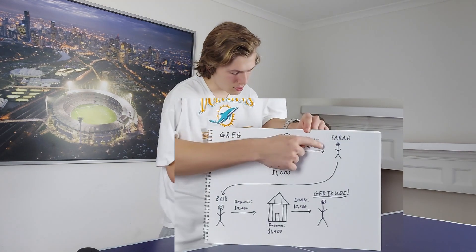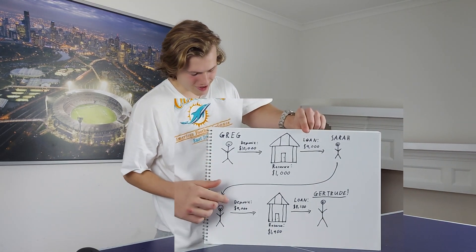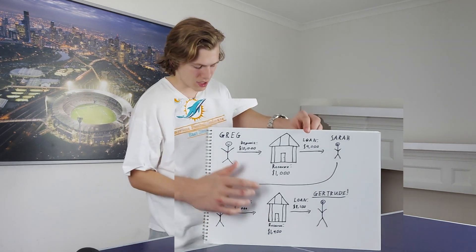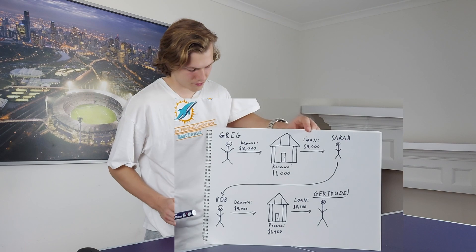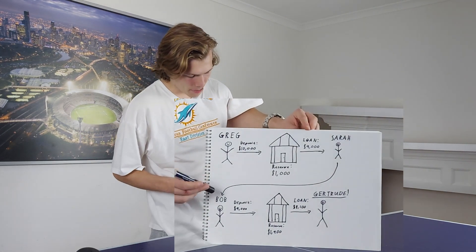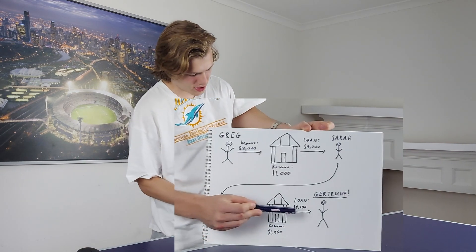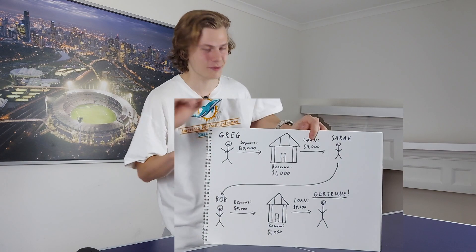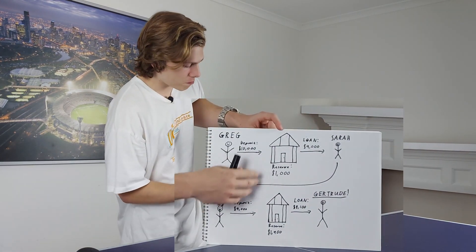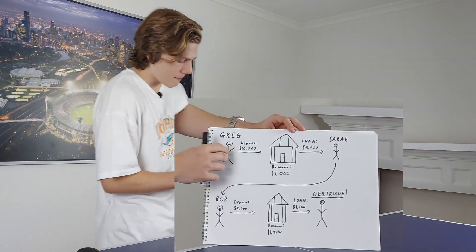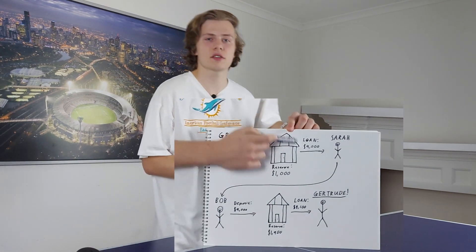Sarah then spends her $9,000 — let's say at a fish and chip shop — to Bob. Bob then deposits that $9,000 into the bank. The bank takes 10% of that $9,000, so it now has a total of $1,900 in reserves. It then loans the remaining 90%, which is $8,100, to the next person — Gertrude. So from the initial deposit of $10,000, the bank has created $9,000 plus $8,100 — that's $17,100 out of thin air. And that is what we call credit.